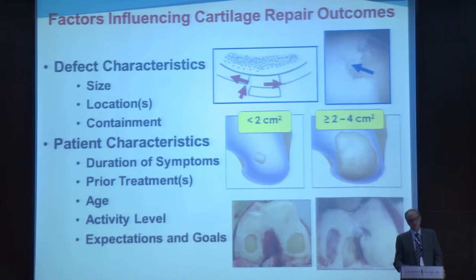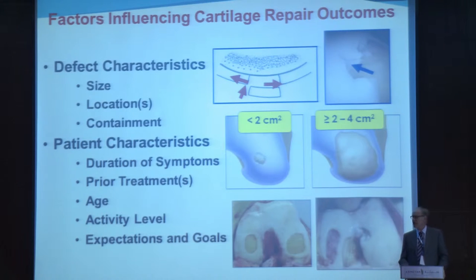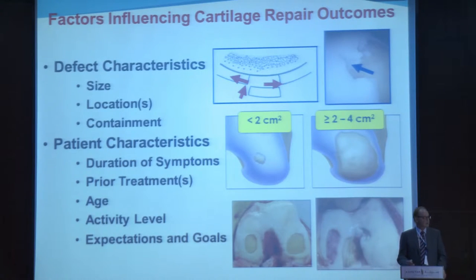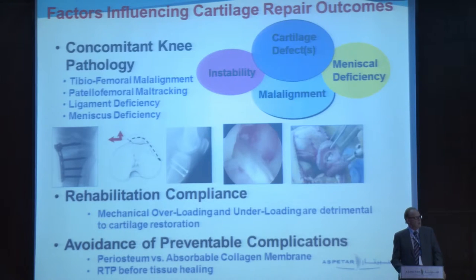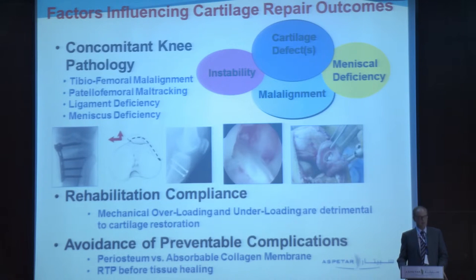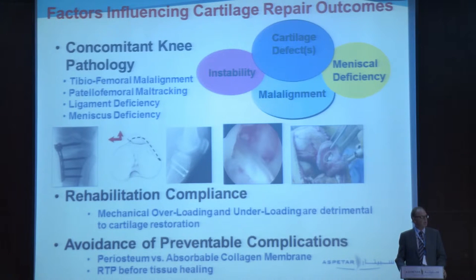Other patient characteristics we want to individualize include duration of symptoms, prior treatments, age of the patient, activity level, and expectations and goals. Concomitant knee pathology — tibio-femoral malalignment, patellofemoral maltracking, meniscal deficiency, and ligamentous deficiency — are all things that need to be addressed, typically concomitant with cartilage reconstruction. These are all examples of cases where we do exactly that.